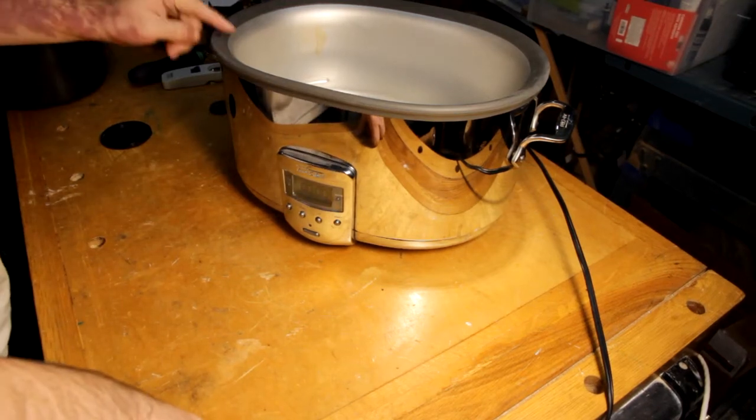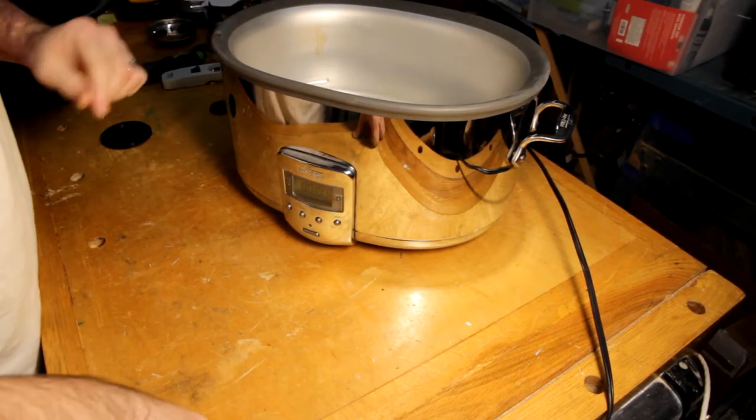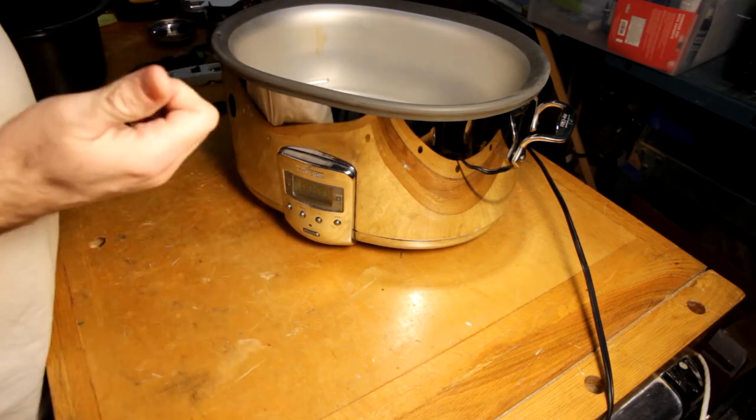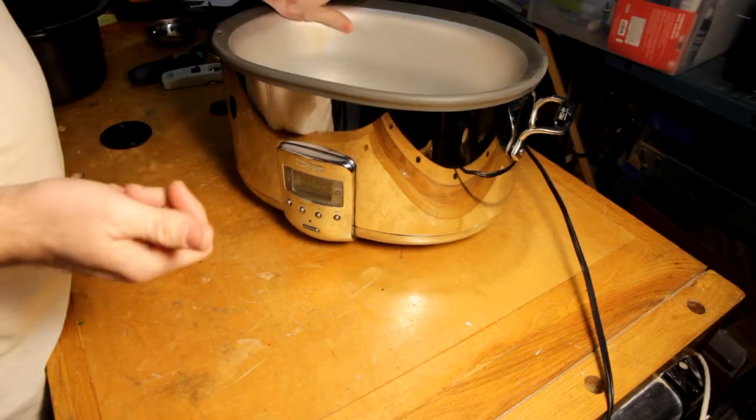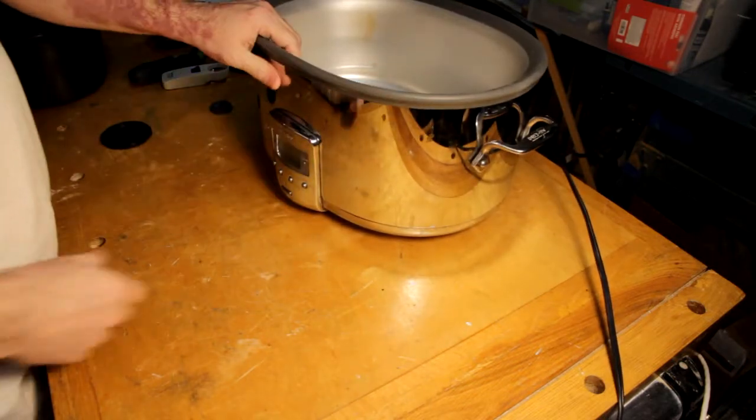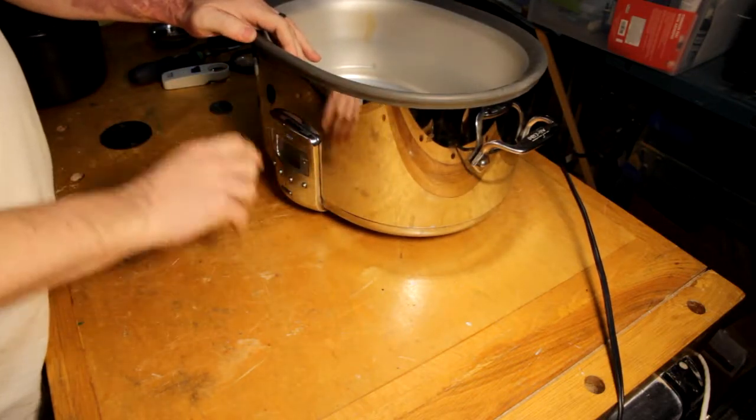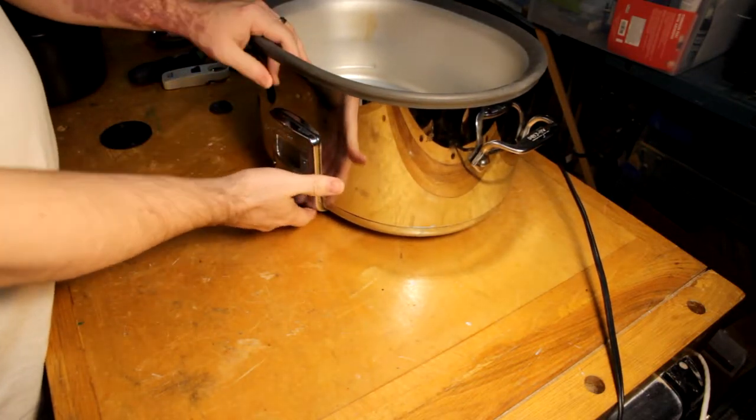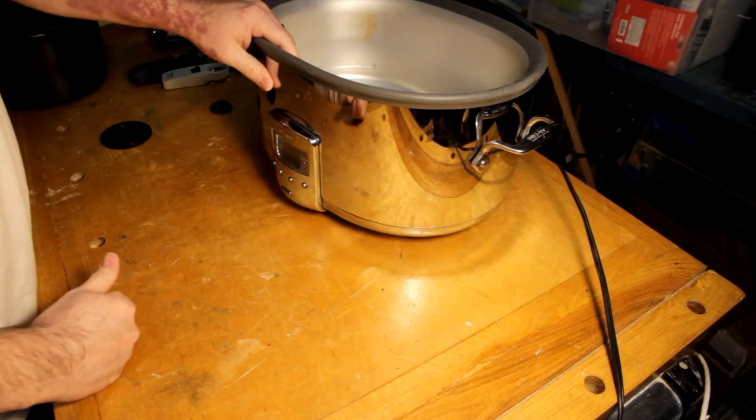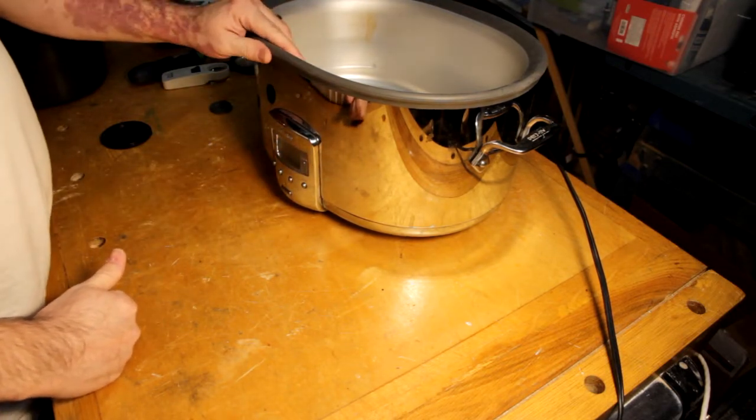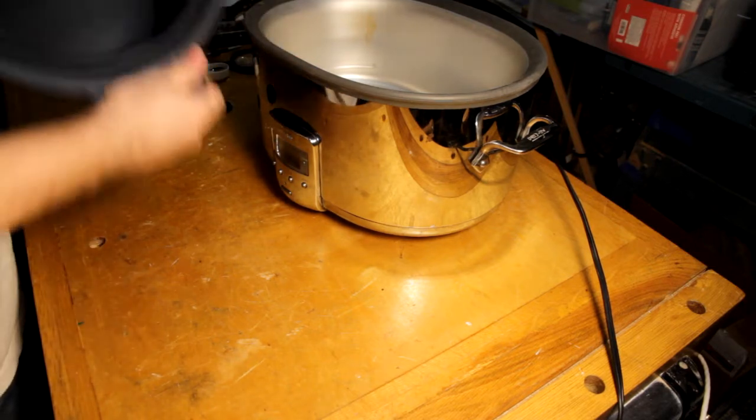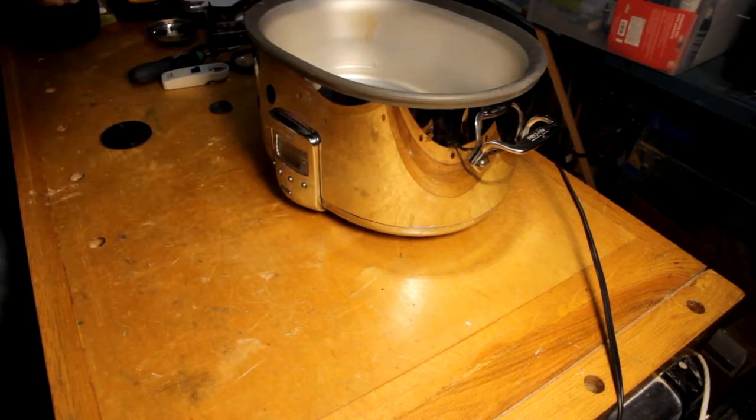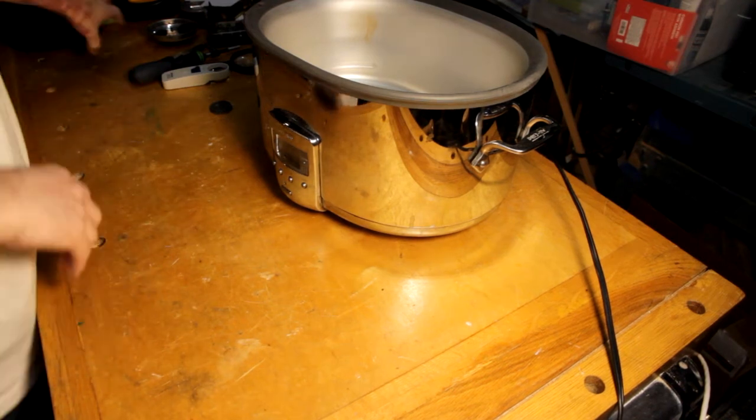Hey everybody, end of 2017, so of course something has to go bad and break. In this case it's an expensive All Clad slow cooker, the one with the aluminum pot. I recommend that one versus the other, but that's a different story.